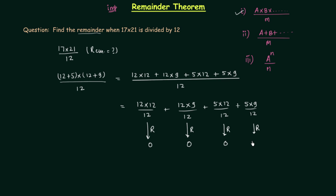In the last term, 5 multiplied by 9, we cannot perfectly divide by 12, so the remainder is not zero. Therefore the remainder when 17 multiplied by 21 is divided by 12 depends only on the last term. The remainder is the same as the remainder when 5 multiplied by 9 is divided by 12.